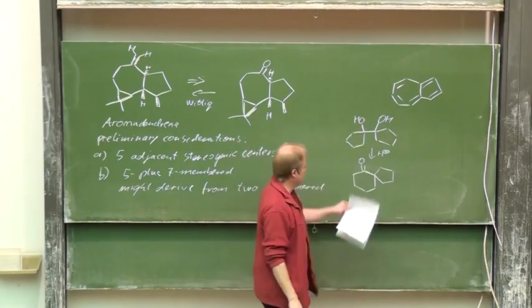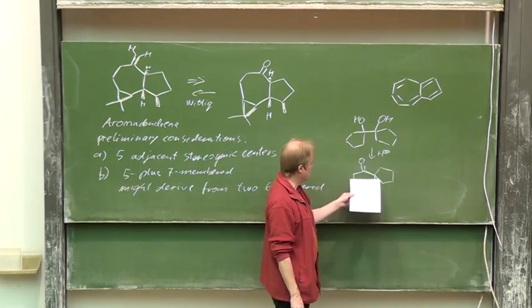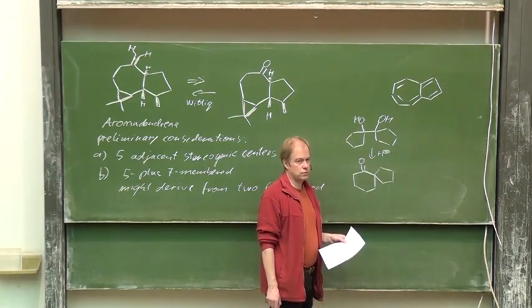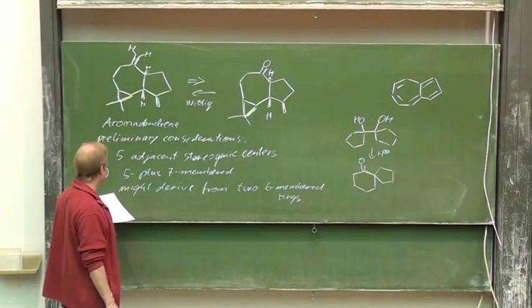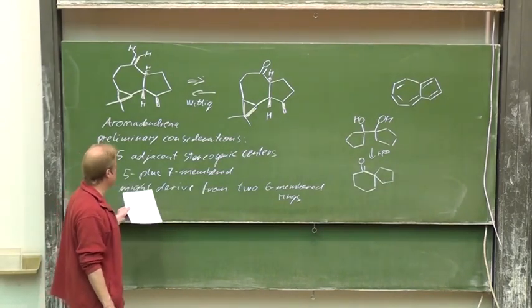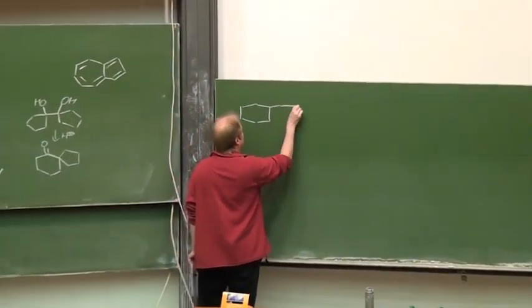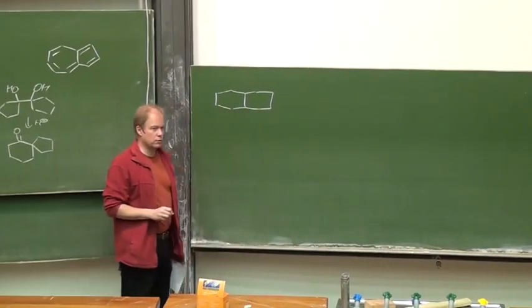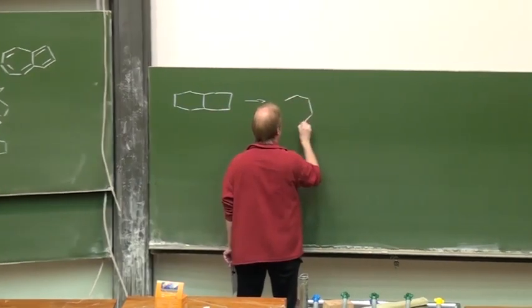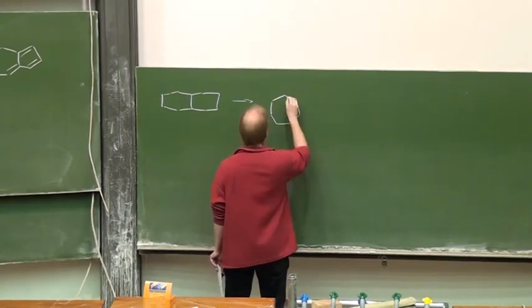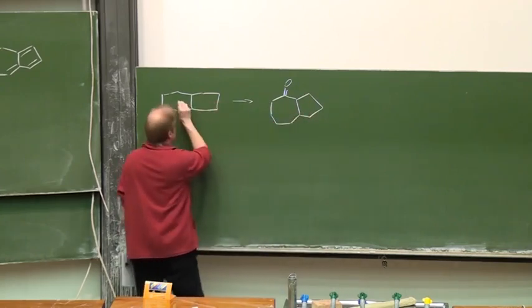Two five membered rings by enlargement gave a six membered and a five membered spirofused. Now one should think about this situation we have two six membered rings and want to achieve the transformation to seven and five membered enlarging this one and making that one smaller.